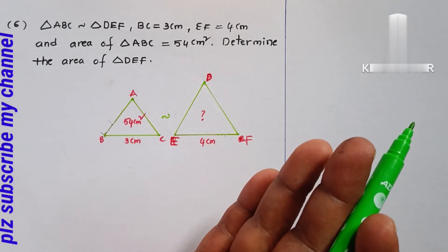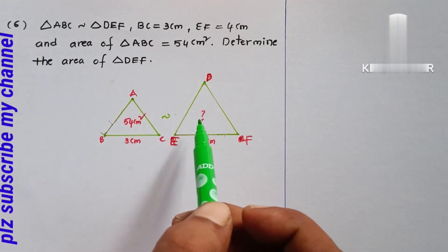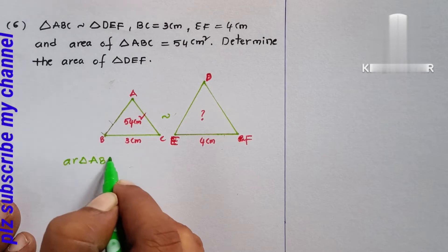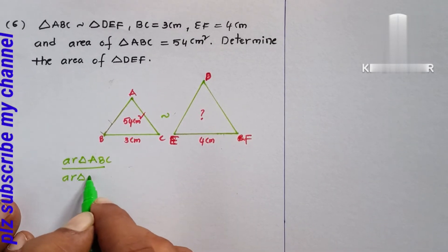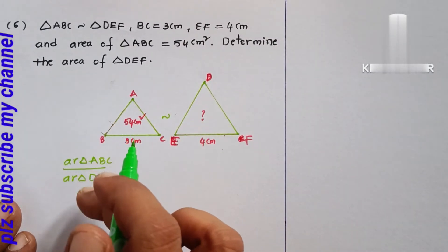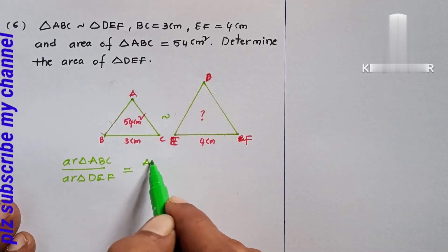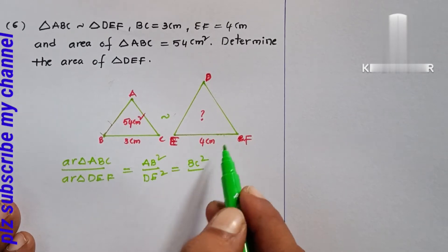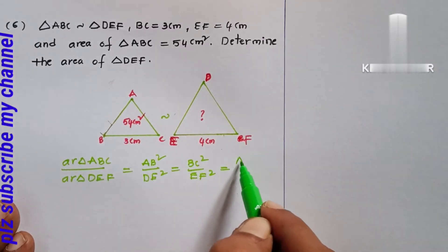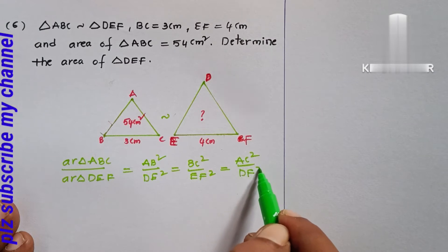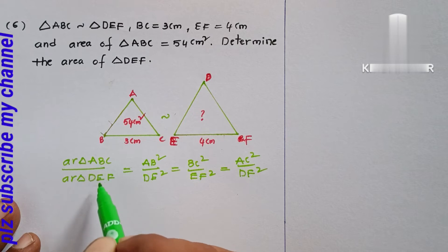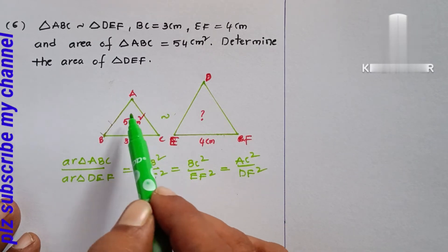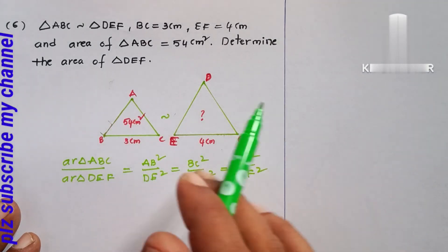For two similar triangles, the ratio of their areas equals the square of the ratio of their corresponding sides: Area(ABC)/Area(DEF) = AB²/DE² = BC²/EF² = AC²/DF². The ratio of areas equals the square of the ratio of corresponding sides.